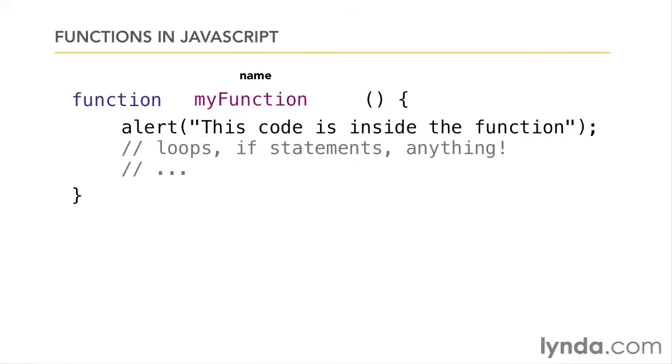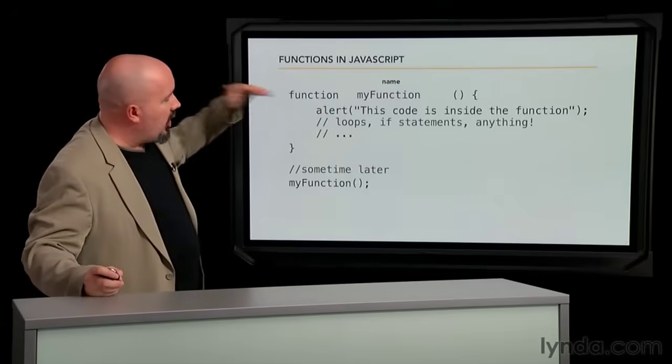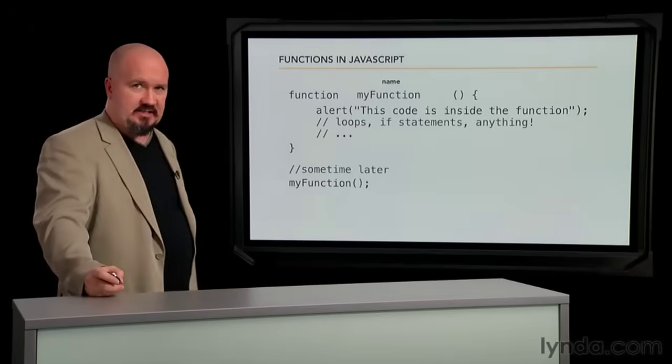Now that we've created this function, we can call it. So somewhere else, a little bit later in the program, I can use the name of the function followed by the empty parentheses and a semicolon. This causes the function body to be called and all the code inside it is executed.